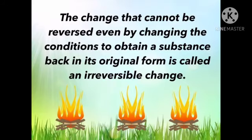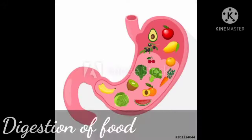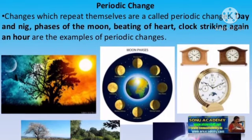An irreversible change is a permanent change that cannot be undone. In an irreversible change, new substances are formed. For example, cake batter is made from eggs, flour, sugar, and butter. Once a cake has been baked, you cannot get the ingredients back. Cooking is another example — we cannot get back the substance we originally started with. Mixing substances can also cause an irreversible change, for example: change of milk into curd, digestion of food, making idli from batter.